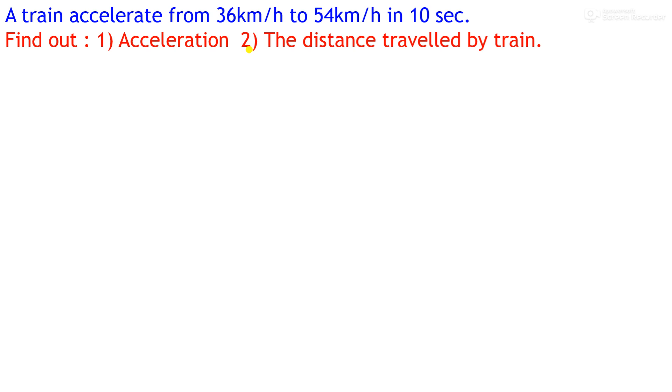We have initial velocity v₁ = 36 km/h, final velocity v₂ = 54 km/h, and time t = 10 seconds. Now, either we convert time into hours or we have to convert this velocity into meter per second.